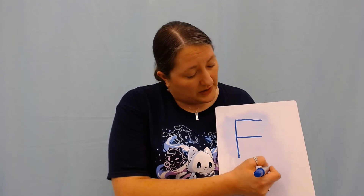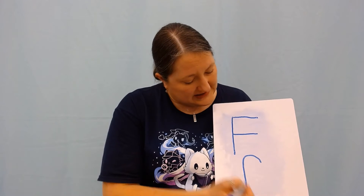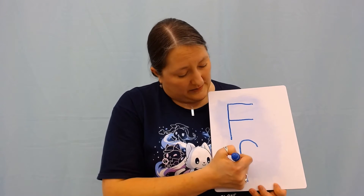If we wanted to draw the lowercase F, we would curve back, then pull down straight and lift, and then we would slide right like that.